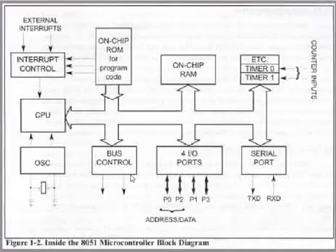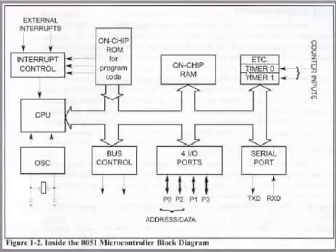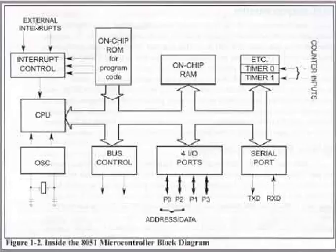Here is the internal block diagram of microcontroller 8051, which consists of different blocks. There is a CPU, and connected to the CPU is a crystal oscillator. There is bus control for input/output ports P0, P1, P2, and P3, plus a serial port. There are timers and counters. There is on-chip RAM for saving program code, plus interrupt control, and external interrupts can also be given. We will be looking forward into this.